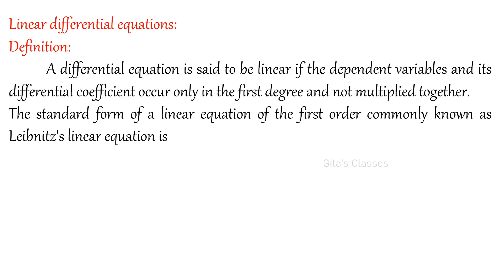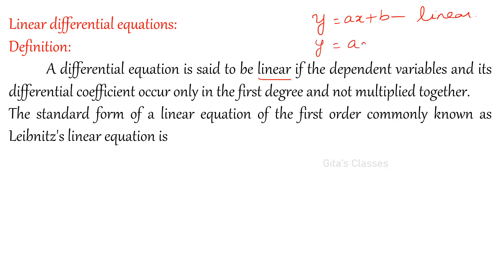Differential equation definition: a differential equation is said to be linear. When will you say it is linear? What is the meaning of linear? Power 1. Remember, power 1 is linear. For example, y equals ax plus b is a linear equation. If you have y equals ax squared plus bx plus c, it is quadratic — second power 2. So linear means power 1.